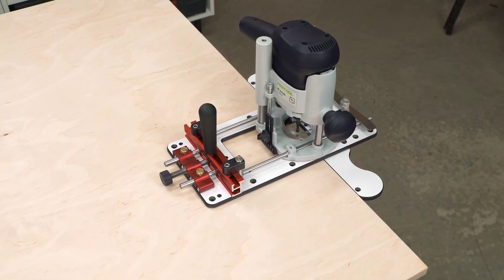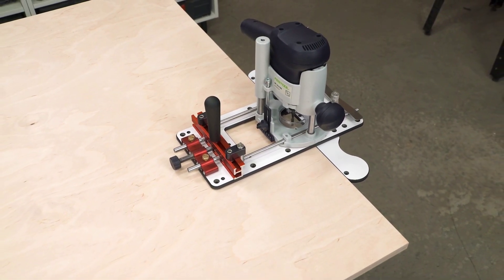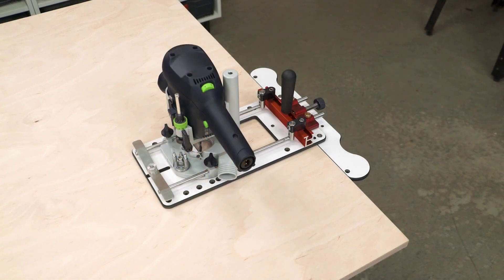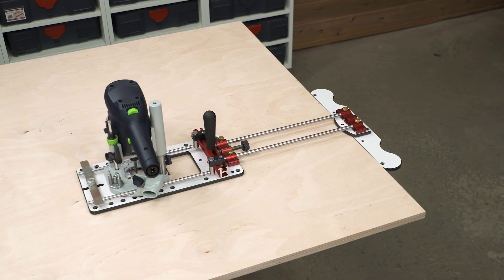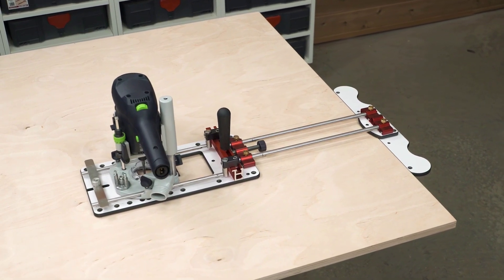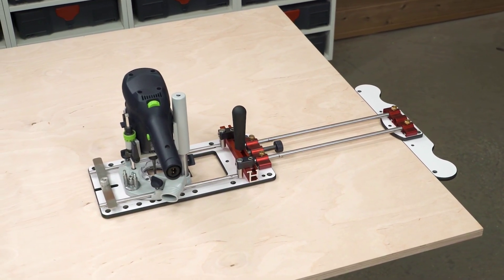The ten positions of the edge guide give you a range from barely kissing the edge to a full 8 inches away. If you need more, add the extension base and position your edge up to 21 inches away.